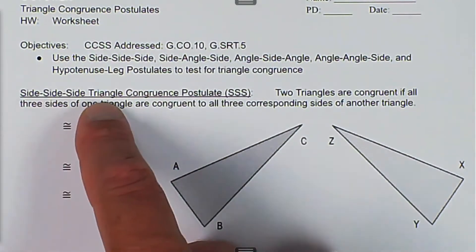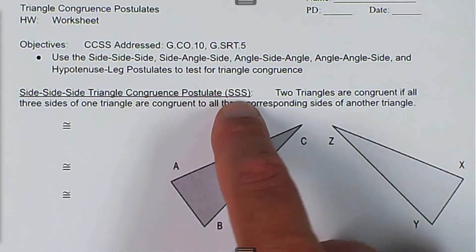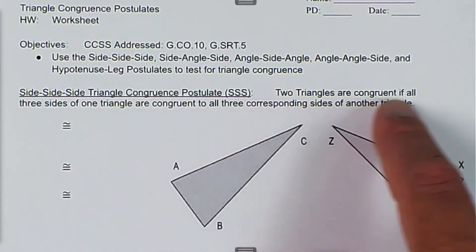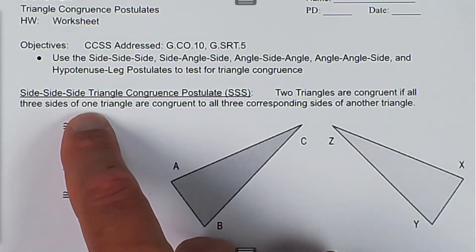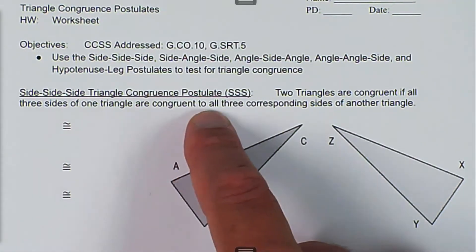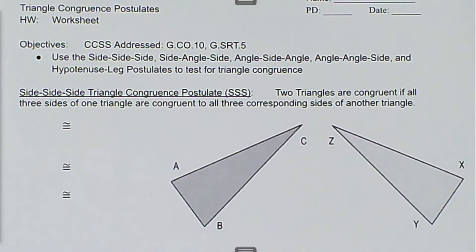Side-side-side triangle congruence postulate, abbreviated as SSS: two triangles are congruent if all three sides of one triangle are congruent to all three corresponding sides of another triangle.